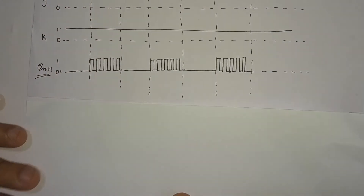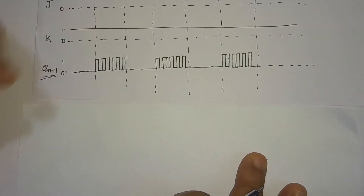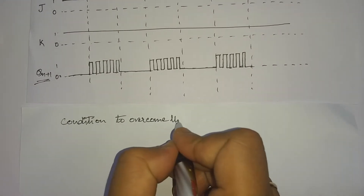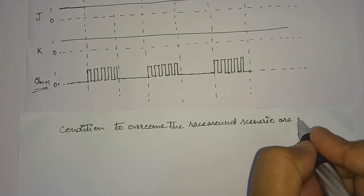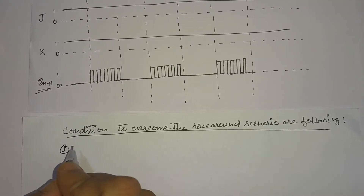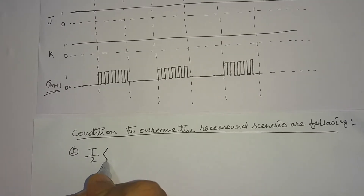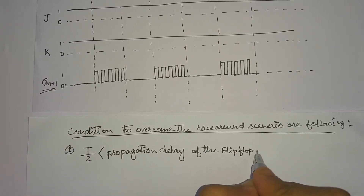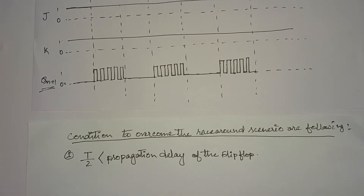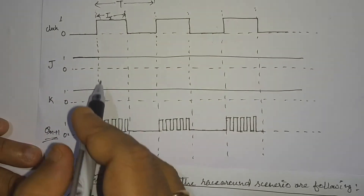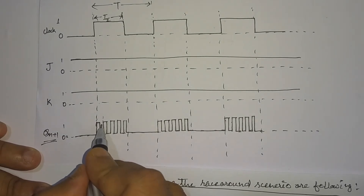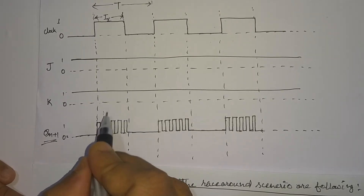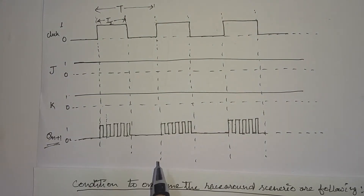To overcome the race around condition, certain conditions or criteria need to be fulfilled while designing. The first condition is that the clock period divided by 2 should be less than the propagation delay of the flip-flop. If the clock pulse duration is very small — less than the propagation delay — then the output will not have time to toggle, and we will not have any race around condition.